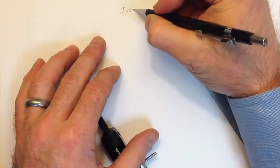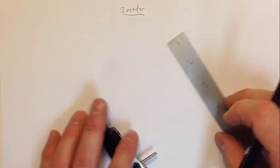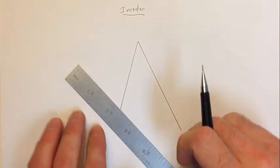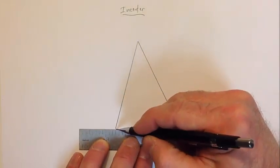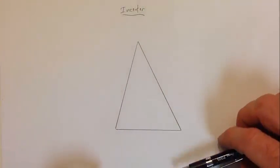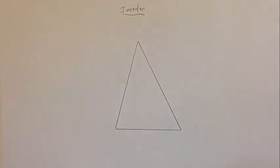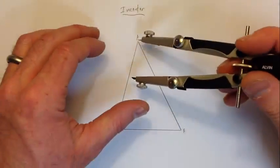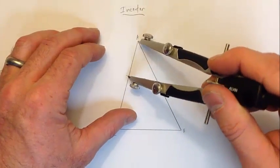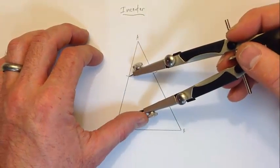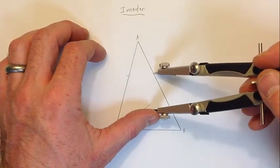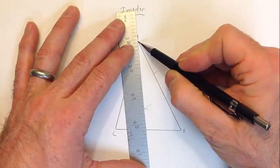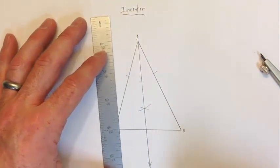Now let's construct the in-center. I'll draw a random acute triangle — triangle ABC. To construct the in-center, we bisect one angle at a time. Starting with angle A: put the point of the compass at A and intersect both sides. Then move the compass to those intersections one at a time and swing arcs where the bisector will lie. Connect the vertex with the intersection of those last two arcs — that ray is the bisector of angle A.